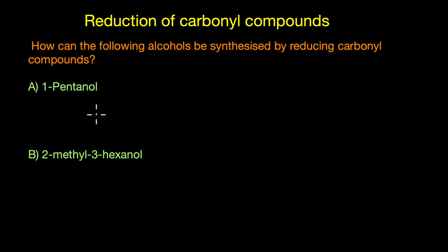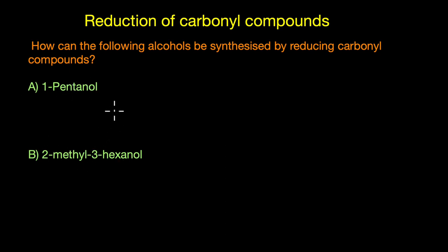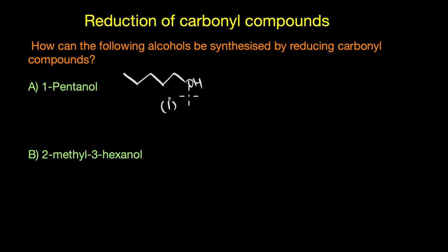The second question asks how the given alcohols can be synthesized by reducing carbonyl compounds — that is, which carbonyl compounds should be reduced using lithium aluminium hydride or sodium borohydride to obtain these alcohols. The first target is 1-pentanol, which is a primary alcohol. A primary alcohol can be obtained by reducing an acid, an ester, or an aldehyde.